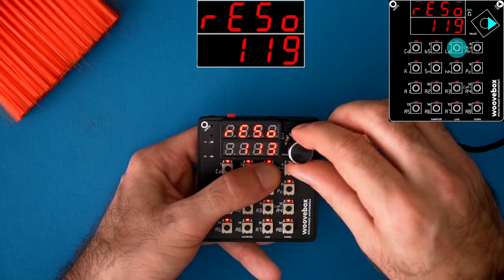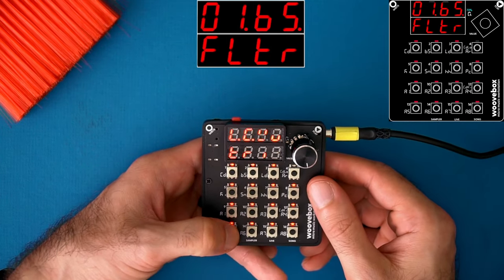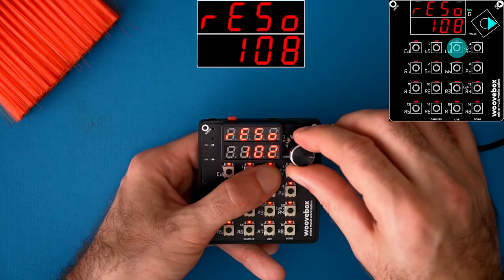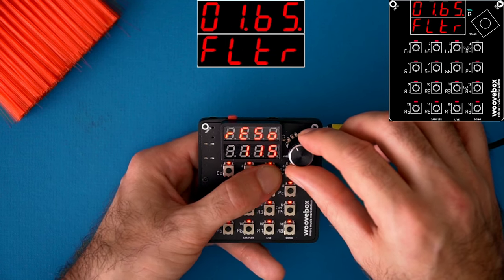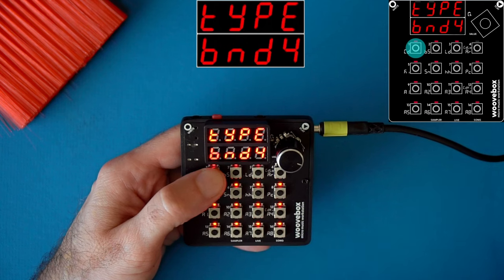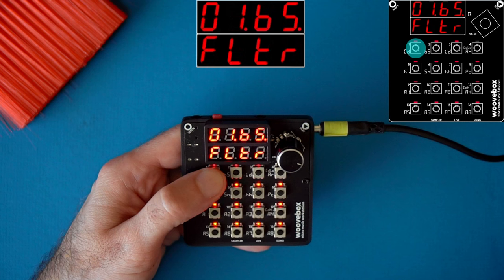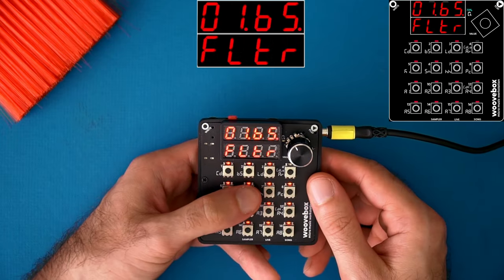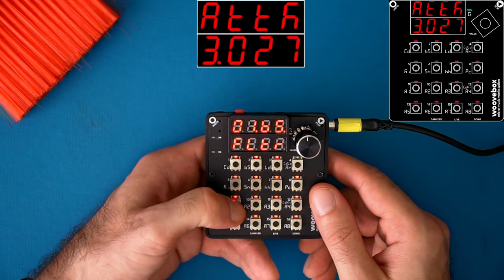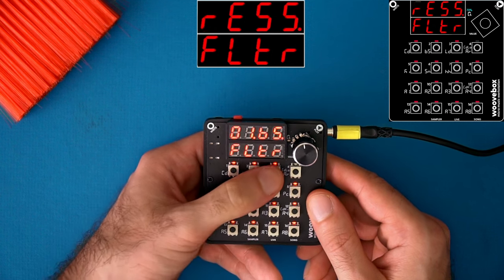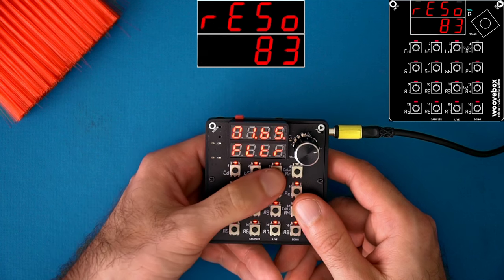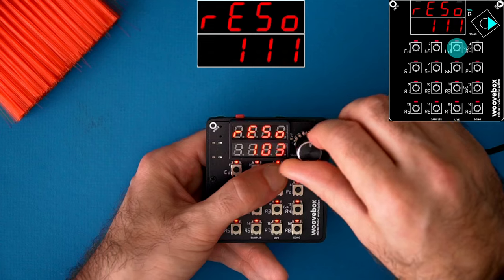Bandpass filter 4 is also a 6dB filter that can resonate. But this one is harsher and may distort at higher resonances.